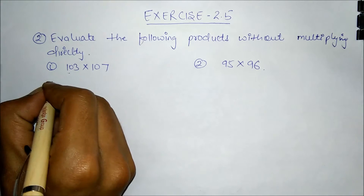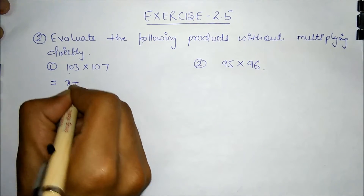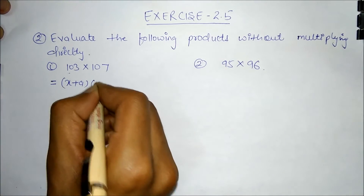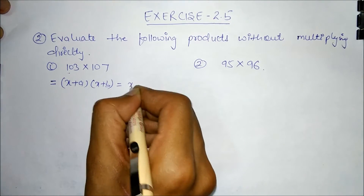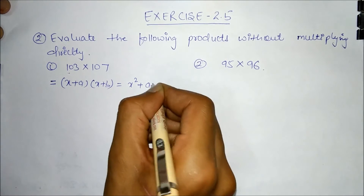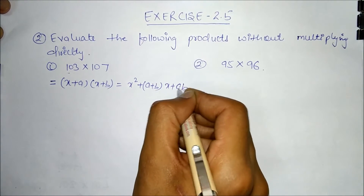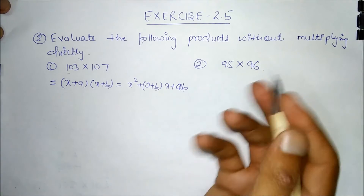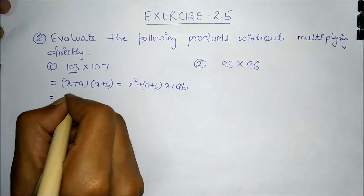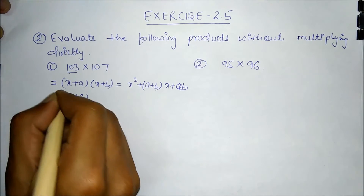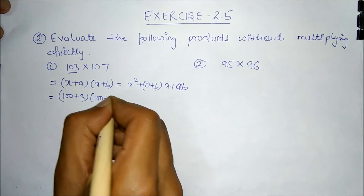Using the identity: (x + a)(x + b) = x² + (a + b)x + ab. In this case, 103 × 107 can be written as (100 + 3) and (100 + 7).